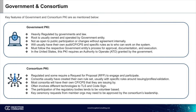For government PKI: it is heavily regulated by governments and law. The root CA is usually owned and operated by a government entity. It is not as open to public participation or changes without internal agreement. It will usually have its own audit, CP, or CPS, and specific rules as to who can work on the system. It should follow the respective government entity's process for approval, documentation, and execution. In the United States, this PKI requires an authority to operate, which is granted by the government — a formal application process where the CA must demonstrate compliance with all government PKI requirements, and it needs to be renewed periodically.